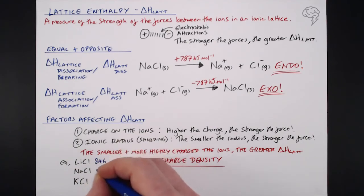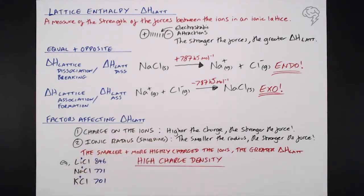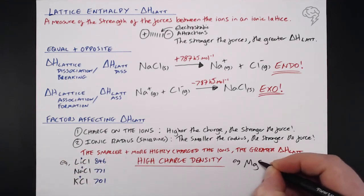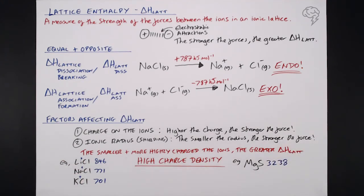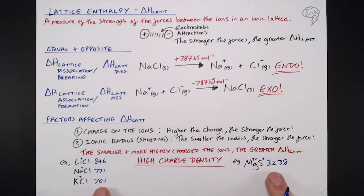For example, as you go down group one, what we see is a decrease in lattice enthalpy. Why? Because all these are one plus, the charge doesn't change, but the atoms are getting bigger, the ionic radius is getting bigger, which lowers the charge density, which lowers the Delta H lattice. On the flip side of things, magnesium sulfide has got a massive Delta H lattice. Why? Because that's two plus and two minus. So you can see the massive difference that the size of the charge makes to the size of the Delta H lattice.